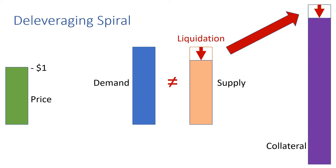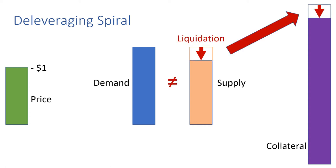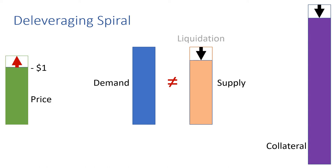If there's a liquidation triggered in this system because there's been an ETH price crash, then the system uses some of the collateral to reduce the supply by essentially buying back the supply, which causes a supply-demand imbalance. This causes the price of the stablecoin to increase and in turn causes demand to decrease, bringing it back in line with supply.